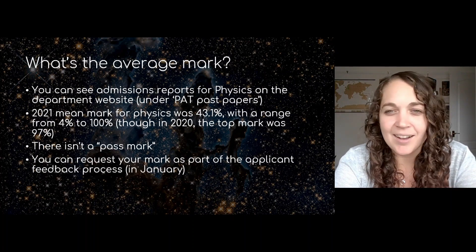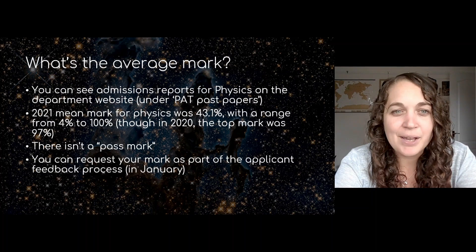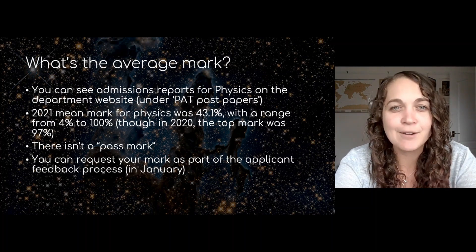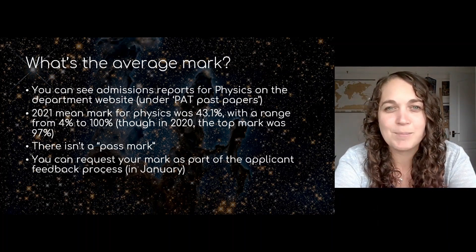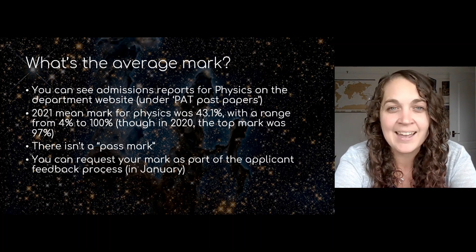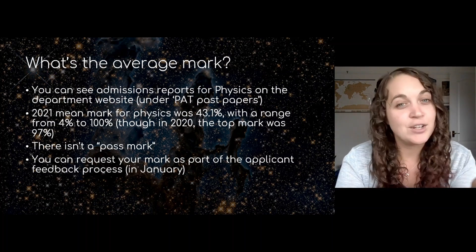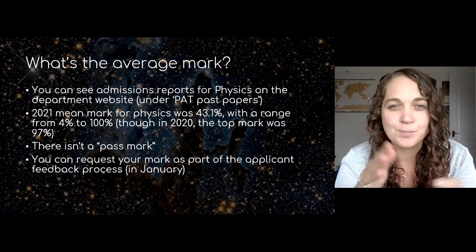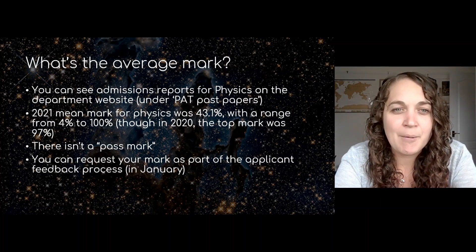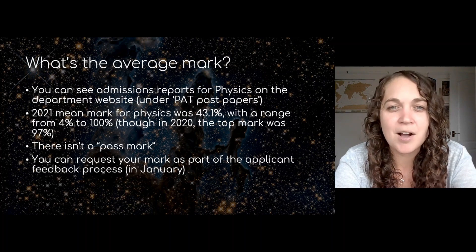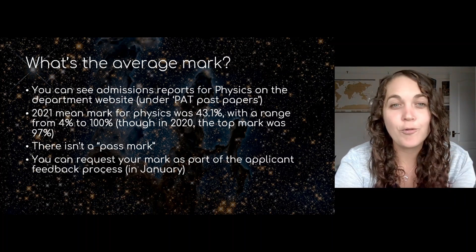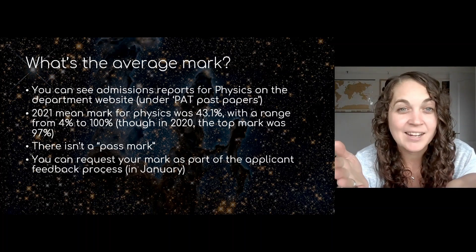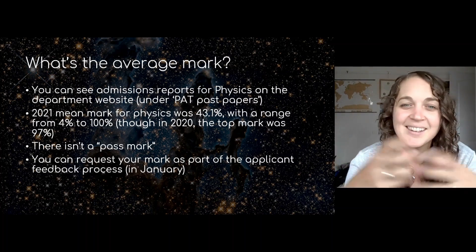In terms of the average mark — I get asked this quite a bit. If you're really interested in looking at the marks for the PAT, you can find admissions reports for the physics department on the physics website under PAT past papers. They give quite a bit of detail about the range of marks and average marks. For last year, 2021, the mean mark for physics applicants was 43.1% — well under half. The range was from 4% to 100%, so quite a wide range of very different marks.